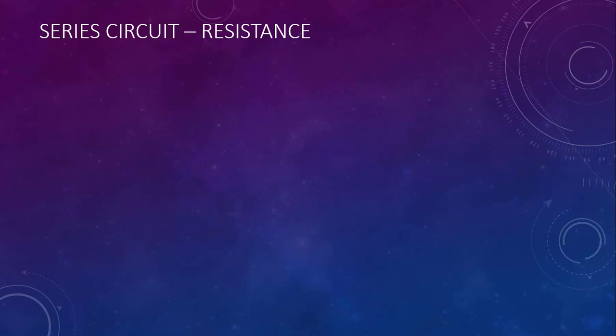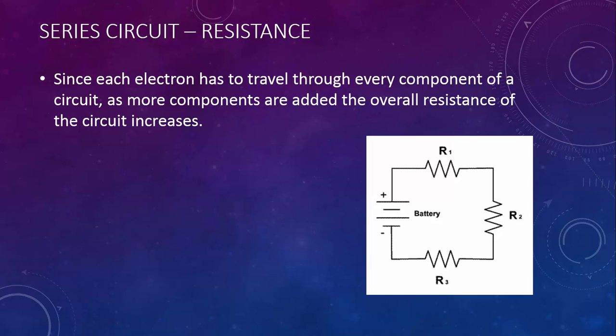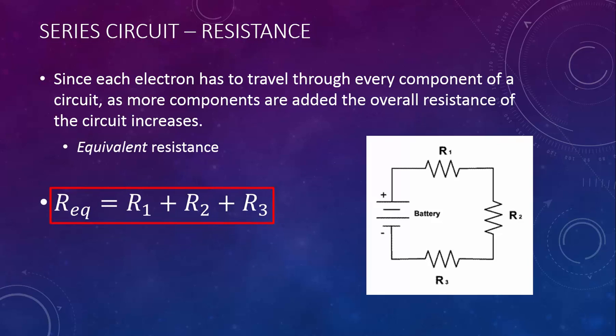Finally, let's talk about resistance for series circuits. Since each electron has to travel through every component, as more components are added, the overall resistance of the circuit increases. This is also known as equivalent resistance. The equivalent resistance in a series circuit is simply the sum of the individual resistances.